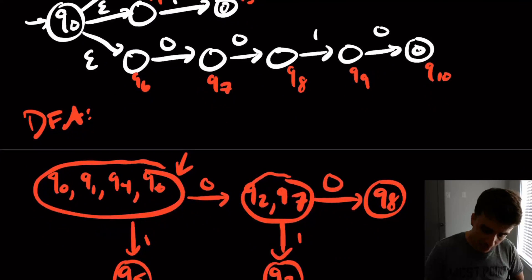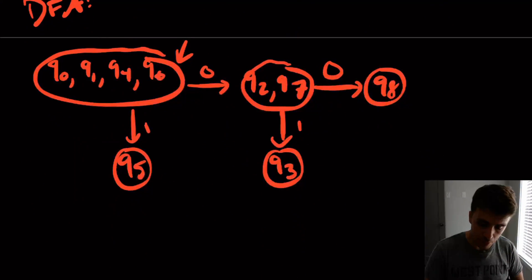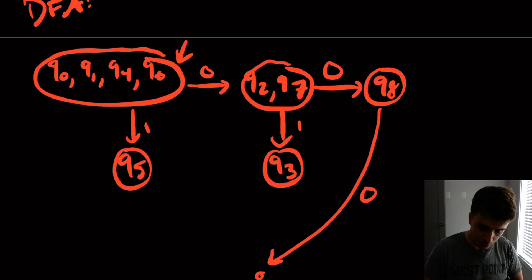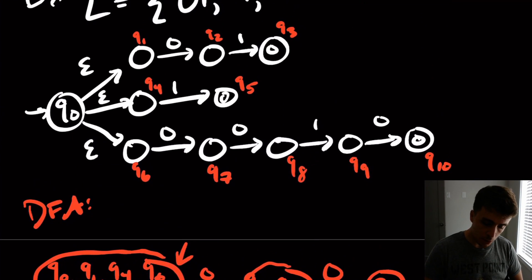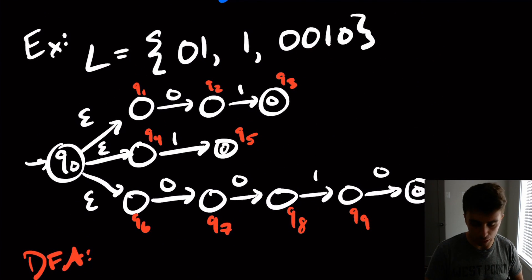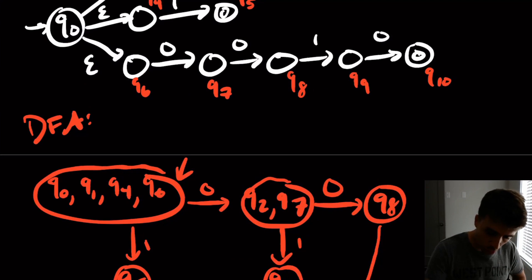So then q8 can go nowhere on input 0. So I'm going to come down here, because this diagram is going to be a little messy. And I'm going to have a state, which is the dead state, the empty set state. And so if you're in q8 and read a 0, you won't accept. And it's pretty clear that you won't, because if you see three zeros in a row, well, that's not a string in the original language. So that's good. On input 1, we can go to q9 from there.